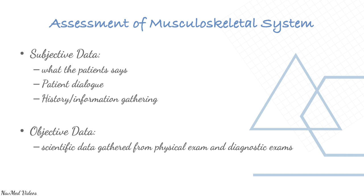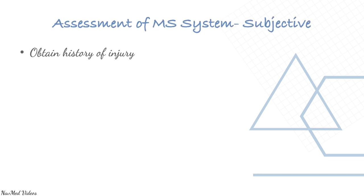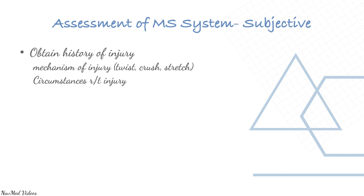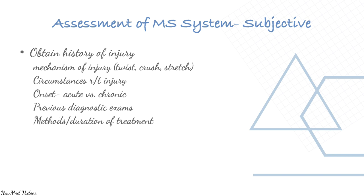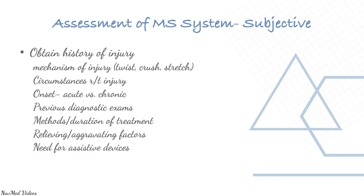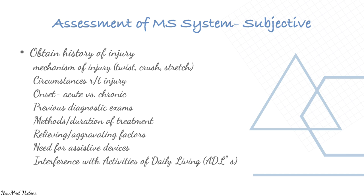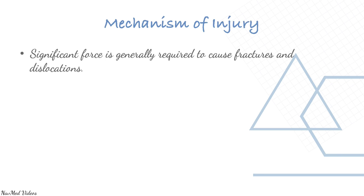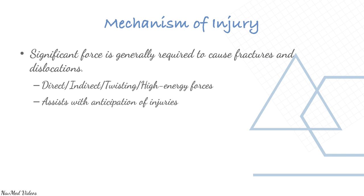The subjective assessment involves obtaining history: mechanism of injury, circumstances, onset, previous exams, method and duration of treatment, relieving and aggravating factors, need for assisting devices, and interference with activities of daily living. Mechanism of injury is very important.